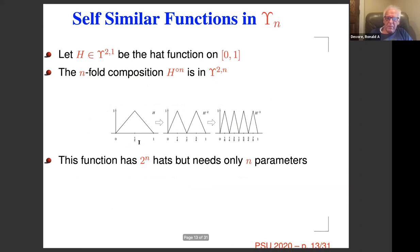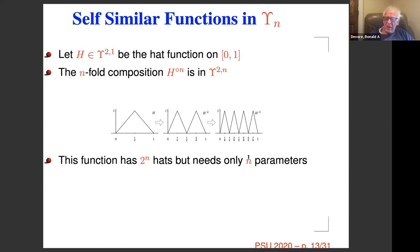The simplest example is: start with a hat function in Υ_{2,1}, compose it with itself N times to get the sawtooth function, which has 2^N teeth. You only needed N parameters to generate this, so this is a low-dimensional manifold with 2^N pieces. In contrast, in spline approximation I would need the dimension to be like 2^N, not N. This is another precursor of why depth is going to be useful.